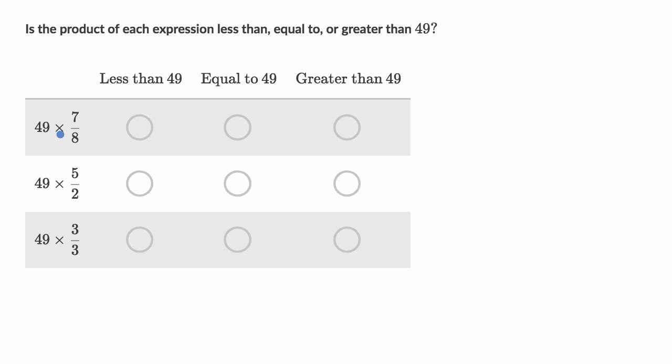All right, so this first one is 49 times 7-eighths. So what do you think that's going to be? Well, 7-eighths is less than one. So if I multiply 49 times something less than one, I'm going to get a value that is less than 49. So I like that choice right over there.